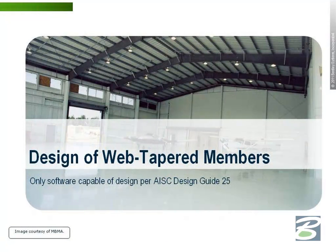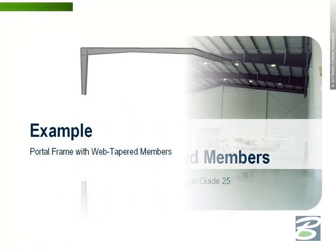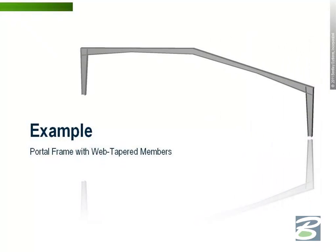The design of web tapered members can be performed per the American Institute of Steel Construction spec 36005 or 36010 by either the allowable stress design or load resistance factor design approach for either code. We have added an option to include the Metal Building Manufacturers Association Special Considerations, which are officially released in Design Guide 25. This option should be selected for web tapered members to consider the additional recommended design checks. The design and reports include the buckling strength multipliers as defined in the Design Guide for the different limit states. All of the solved examples in the Design Guide are included in the set of installed example models with RAM Elements V8i to verify the results.